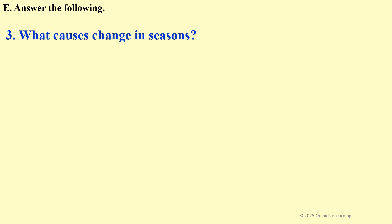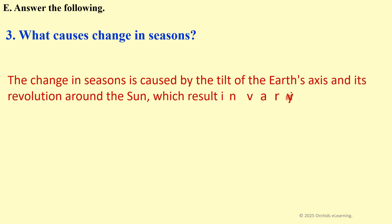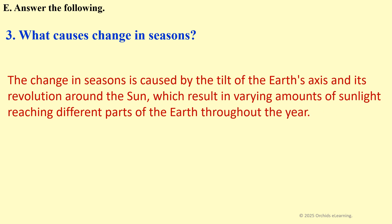What causes change in seasons? The change in seasons is caused by the tilt of the earth's axis and its revolution around the sun, which results in varying amounts of sunlight reaching different parts of the earth throughout the year.